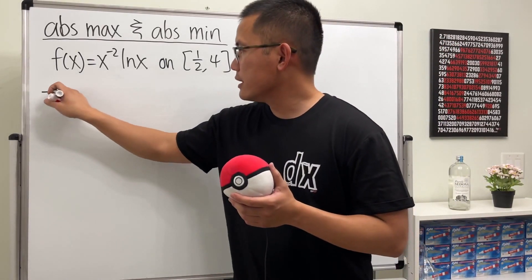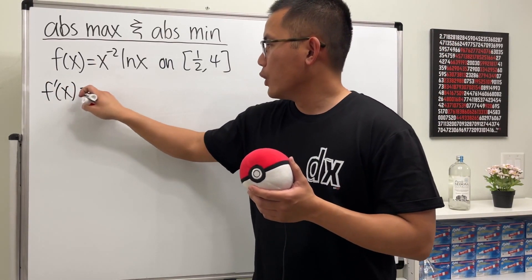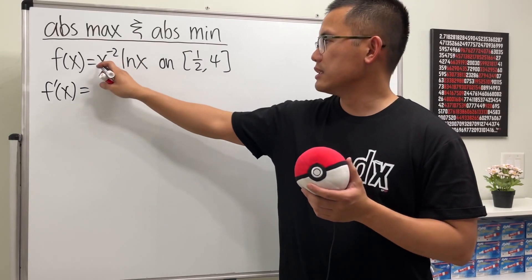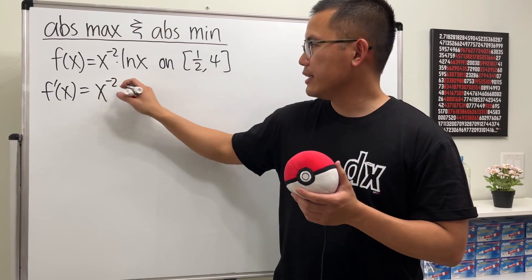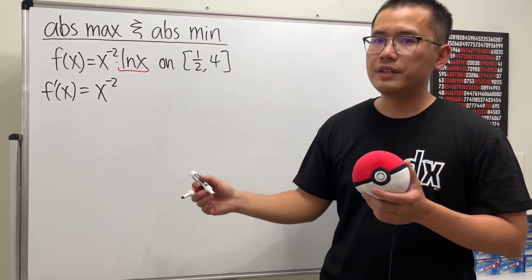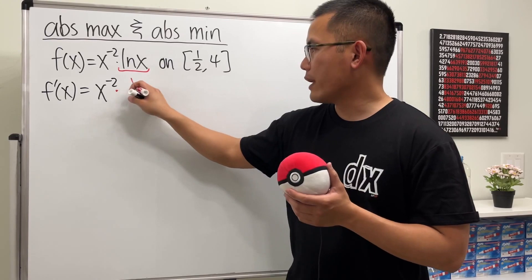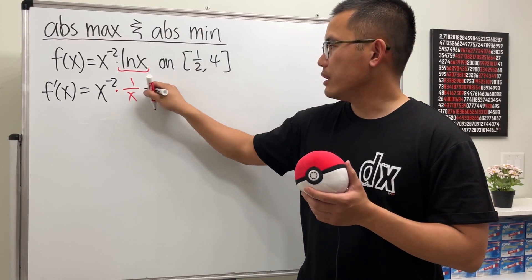Find the derivative first, f prime of x. We need to use the product rule because this is this times that. Keep the first function, x to the negative 2, and we multiply by the derivative of the second. Derivative of ln x is 1 over x.